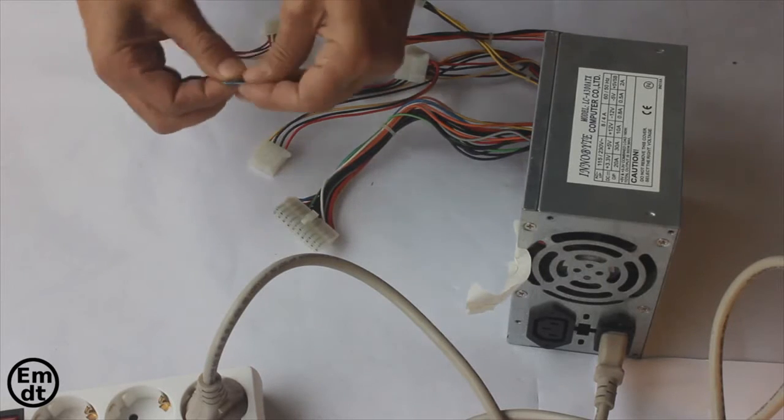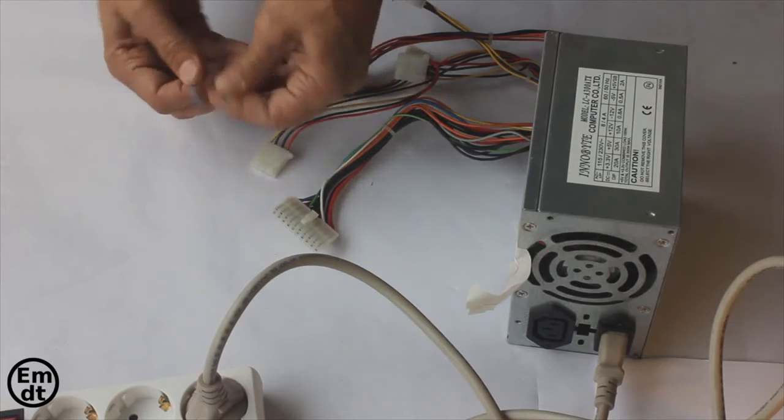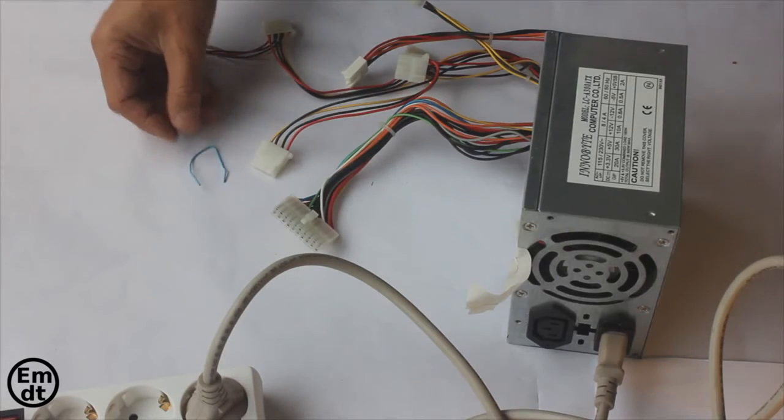To switch on the power supply unit, what you have to do is to connect the fourth pin, which color is green, to a black pin in the main connector of the power unit.